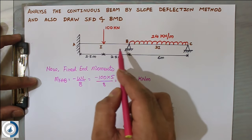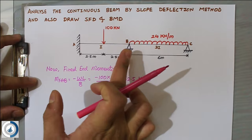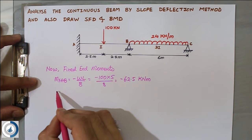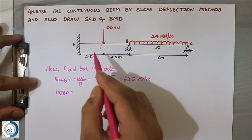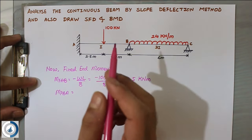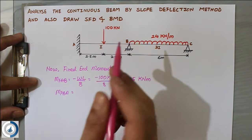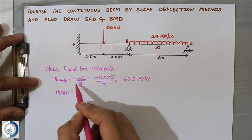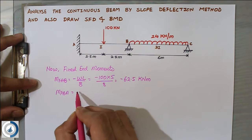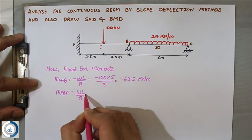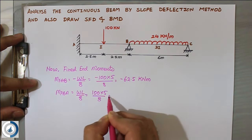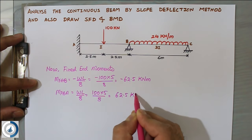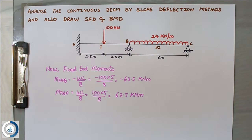For MFBA, the moment is clockwise and clockwise is taken as positive. The formula remains the same: 100 × 5 ÷ 8 = positive 62.5 kNm. So the fixed end moments for span AB are minus 62.5 and plus 62.5 kNm.